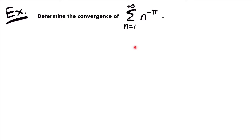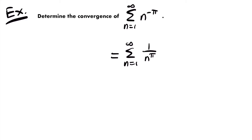Let's look at another example. We want to determine the convergence of the sum from n equals 1 to infinity of n to the power of negative pi. At first glance this doesn't look like a p-series, but if we manipulate it a little you will see that it is. We have n to the negative power of pi; making that exponent positive by moving it to the denominator gives us the sum from n equals 1 to infinity of 1 divided by n to the positive power of pi, which is in the form of a p-series.